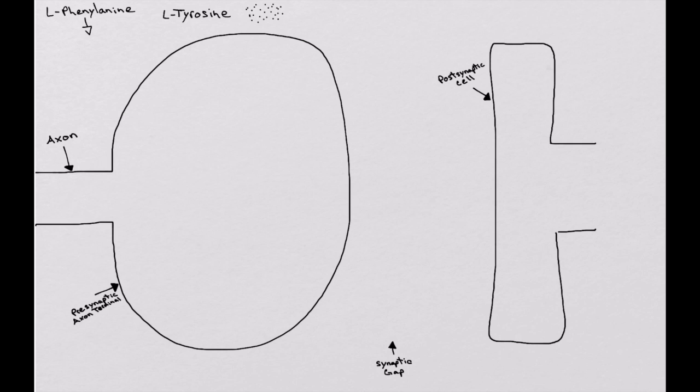Just like the dopaminergic and noradrenergic synapse, we start out with tyrosine, which is the basic amino acid that we find in our diet. Tyrosine comes out of the food that we eat. We eat the food, we break it down in our stomach, and it ends up in the extracellular space.